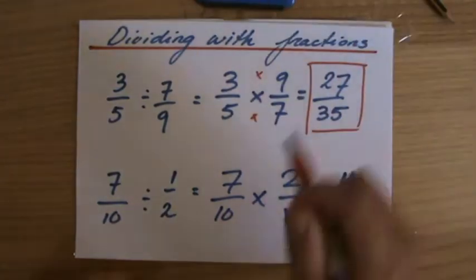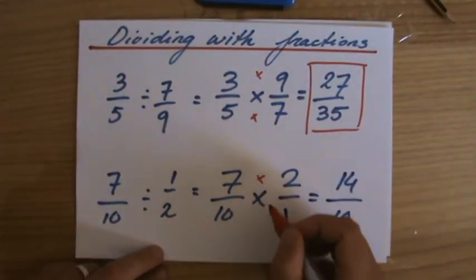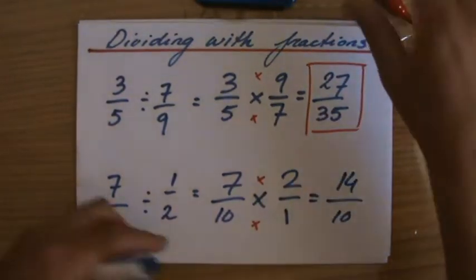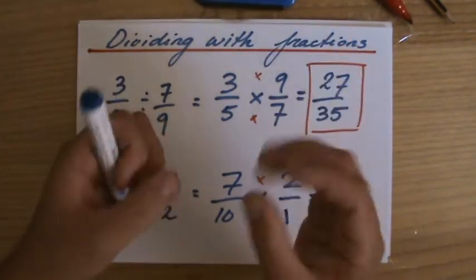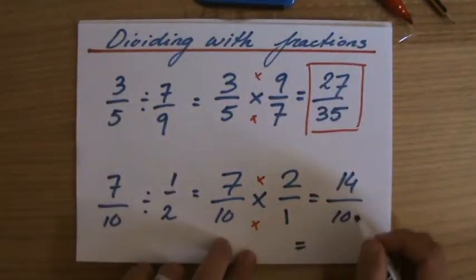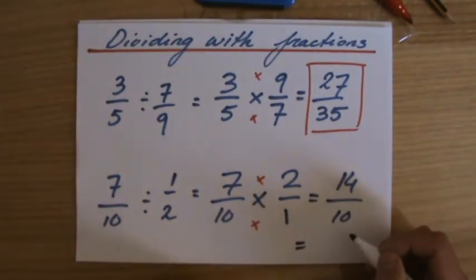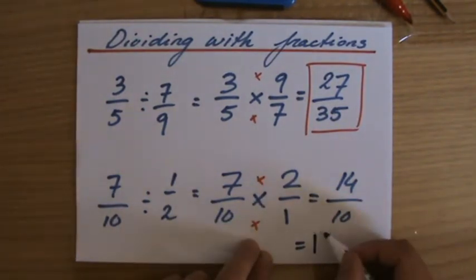Now you notice 14 over 10. Yeah, hang on a minute. That is top heavy. That is an improper fraction. We have to simplify that. We have to turn that into a mixed number. That's really good. That's well thought. 14 divided by 10. 10 will fit in once. My remainder will be 4 over 10.